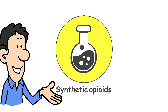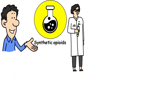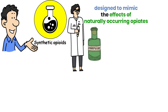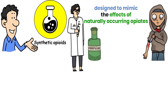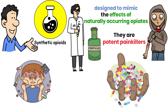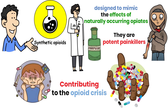Synthetic opioids are man-made substances designed to mimic the effects of naturally occurring opiates like morphine or heroin. They are potent painkillers but carry a high risk of addiction and overdose, contributing to the opioid crisis.